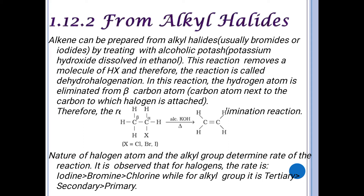For preparation from alkyl halides, we usually use bromine or iodine — that is, bromides or iodides. We use alcoholic potassium hydroxide, that is KOH dissolved in ethanol. This reaction removes a hydrogen and a halogen, and is therefore called dehydrohalogenation.